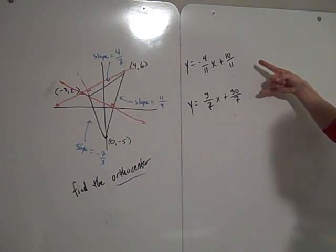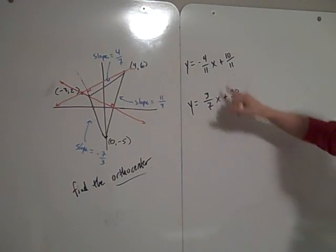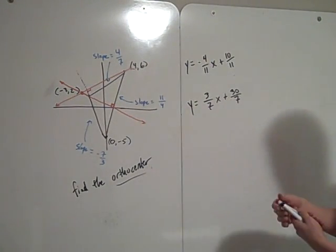Now that we have our two equations, we can set these two equal to each other to find the x value for which these two lines are equal.